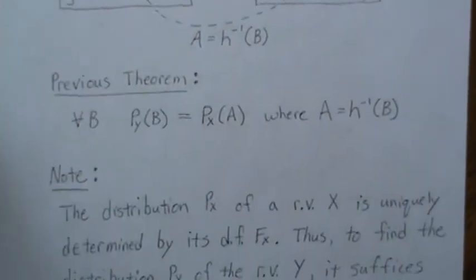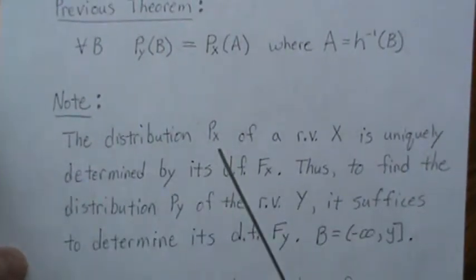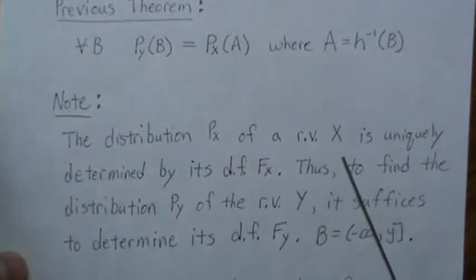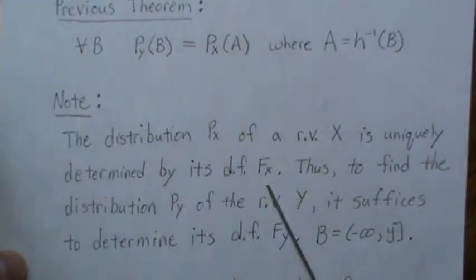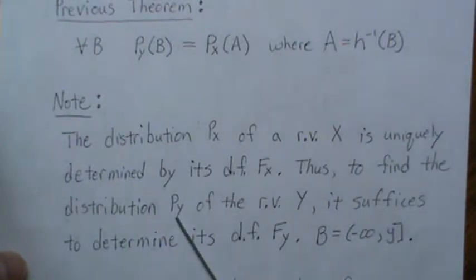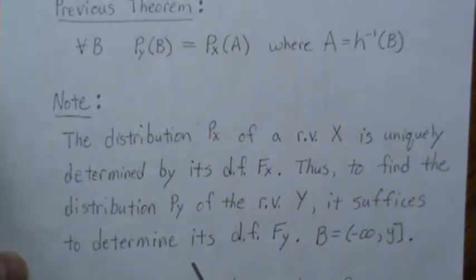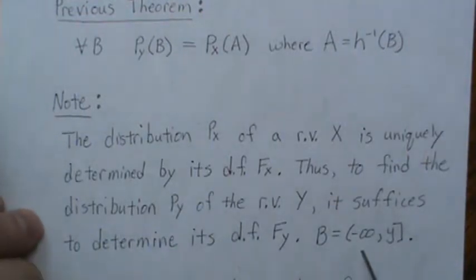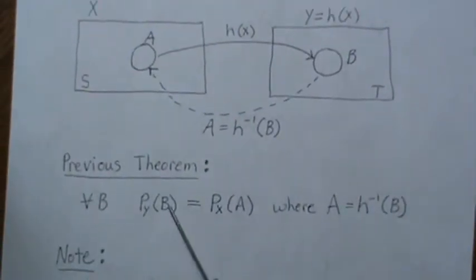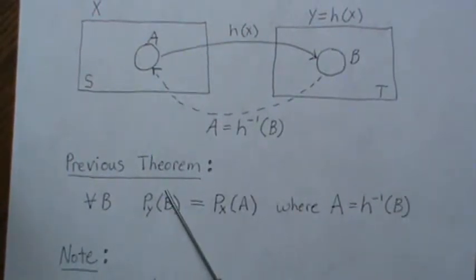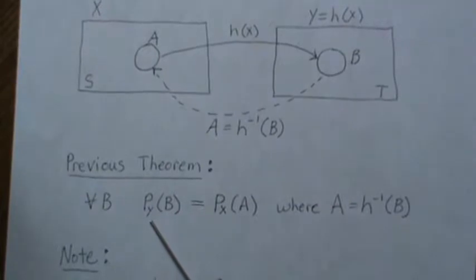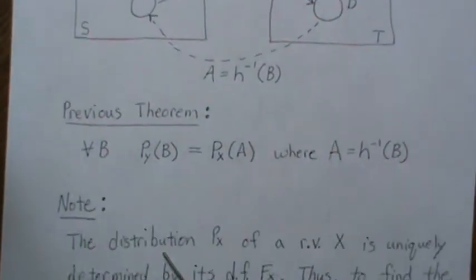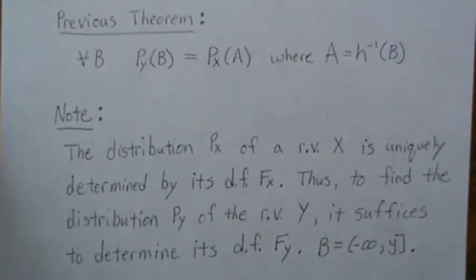The CDF uniquely determines the probability distribution function. The distribution of a random variable X is uniquely determined by its distribution function F(x). Thus, to define the distribution of Y, it suffices to determine its distribution function. So we set B to be everything less than or equal to some value little y, find the probability of B — which is the distribution function of Y — and from that we can find the density or probability mass function of Y.